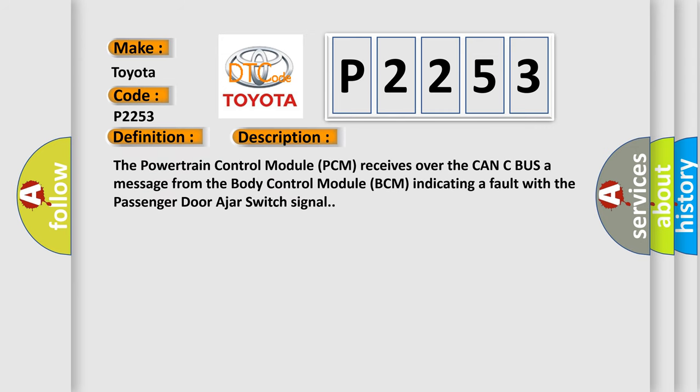The powertrain control module (PCM) receives over the CAN-C bus a message from the body control module (BCM) indicating a fault with the passenger door ajar switch signal.